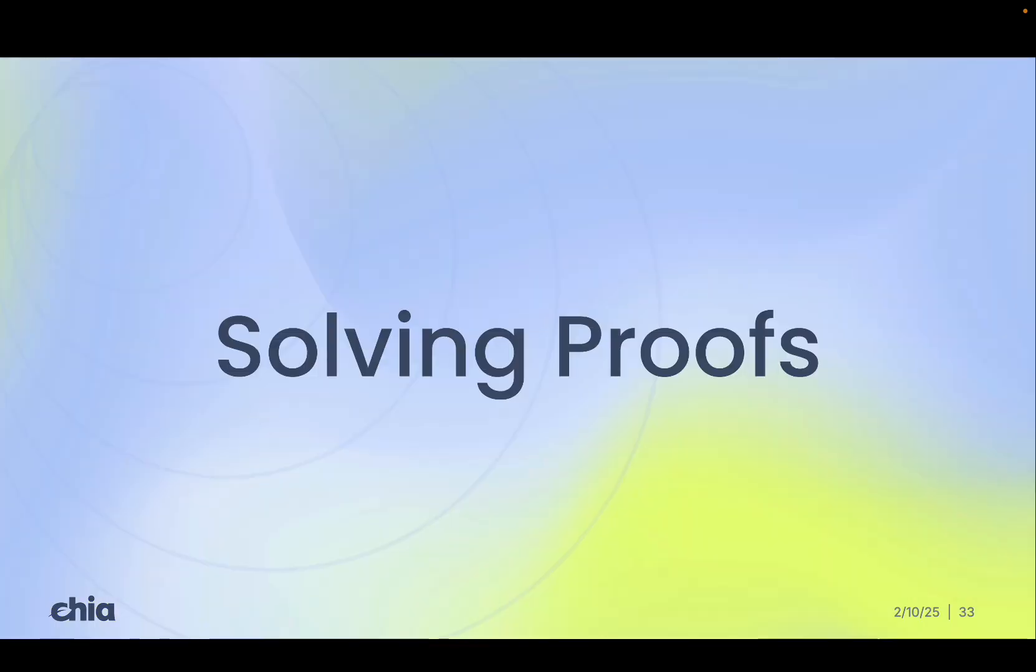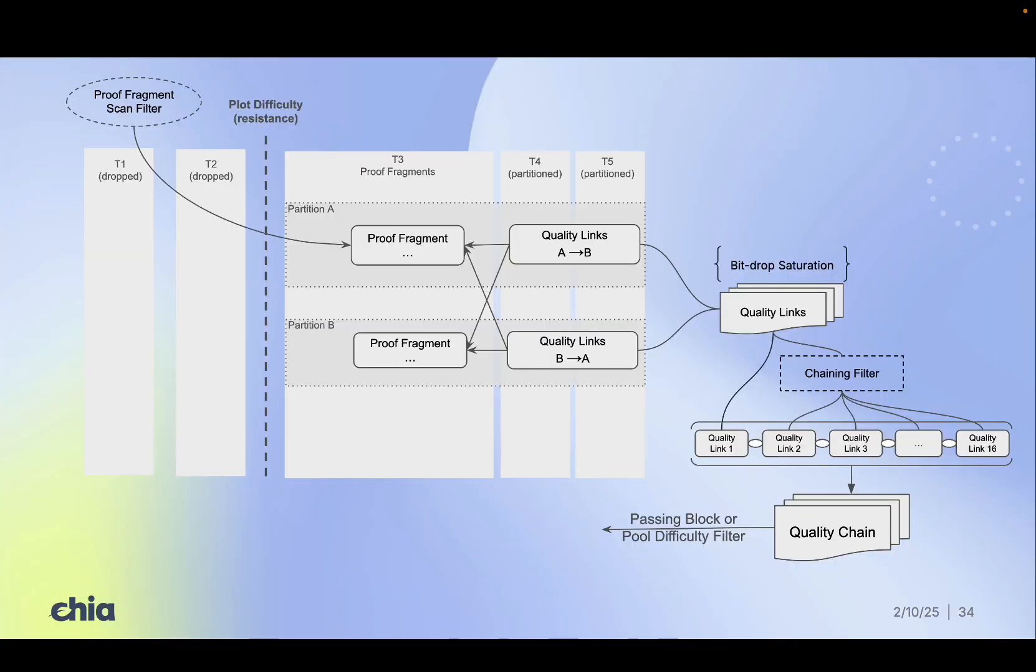Now let's take a look at how an honest farmer turns a quality chain into a full proof. Each chain contains proof fragments of dropped bits, which must be recomputed into full x values for the network to verify them. So once one or more chains are built, they're hashed through the challenge and tested against the block or pool difficulty.